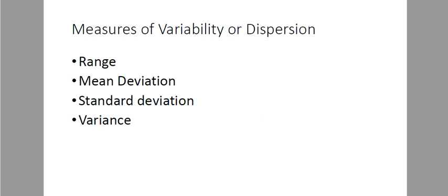Good day. Now let's go to measures of variability or dispersion. This measure will tell us whether your data are homogeneous, meaning they are close to each other, or heterogeneous, meaning they are far from each other. We will be talking about the range, the mean deviation, the standard deviation, and the variance.